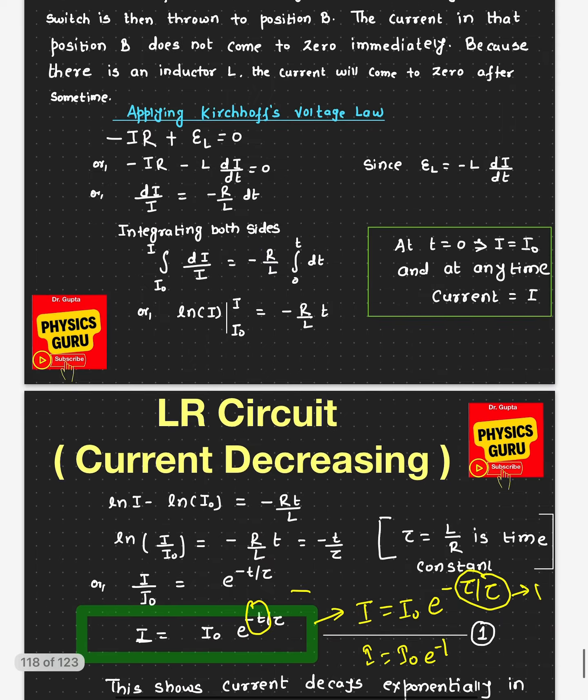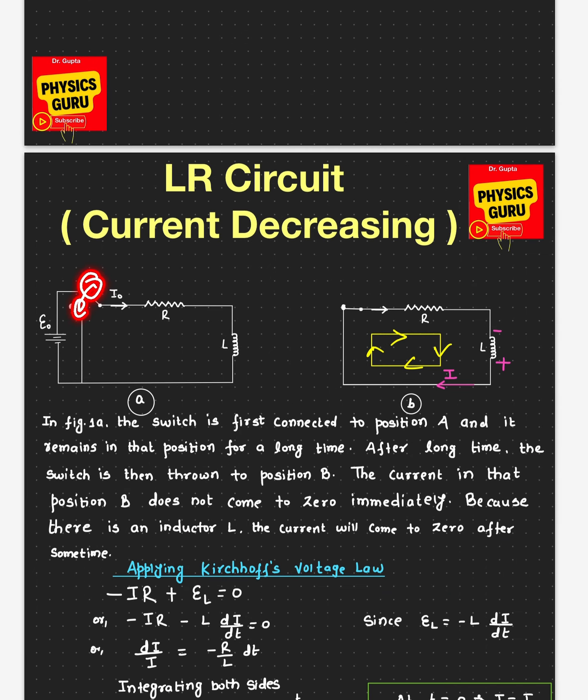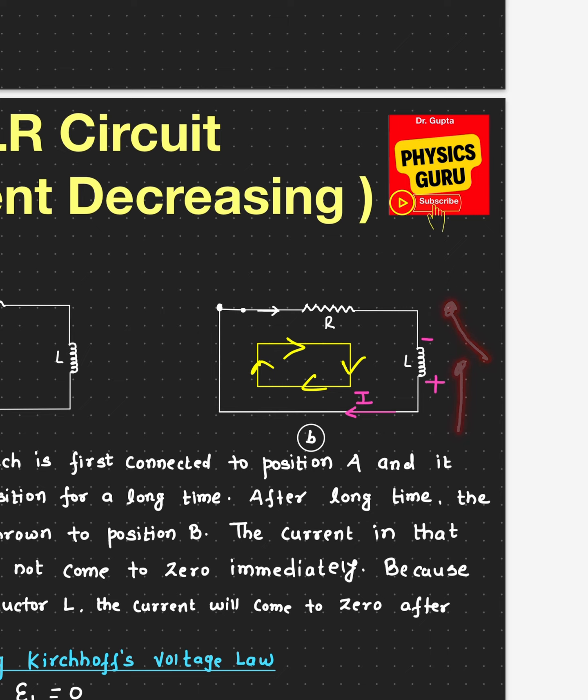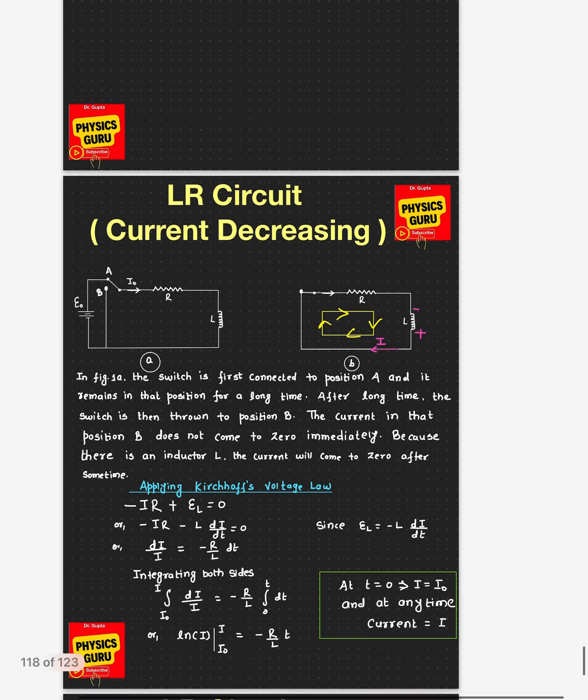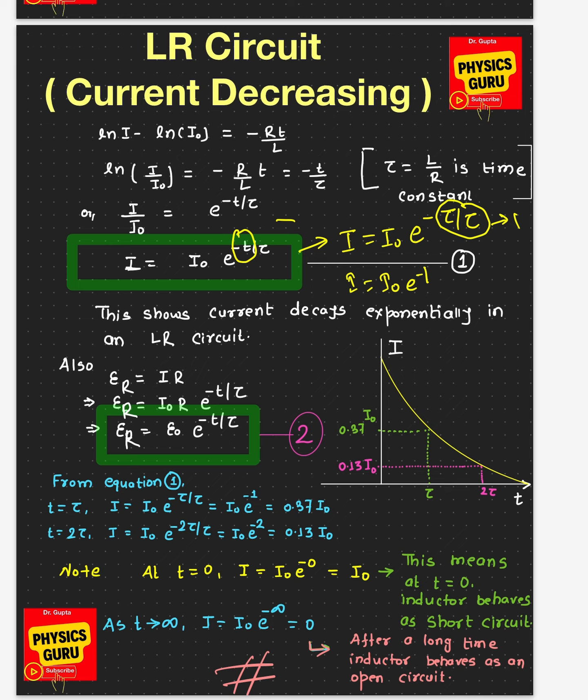Let's understand the behavior of the inductor once more. At time equals zero — when we throw the switch to B — the current is at its maximum, meaning the inductor behaves as a short circuit, just like a wire. After a long period of time, the current in the circuit is zero, meaning the inductor behaves as an open circuit, as if there is a gap. In the next video, I'm going to give you an example of a numerical problem based on decaying current in a circuit. Thank you very much.